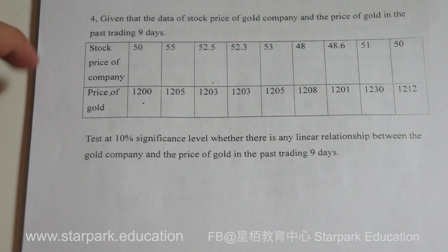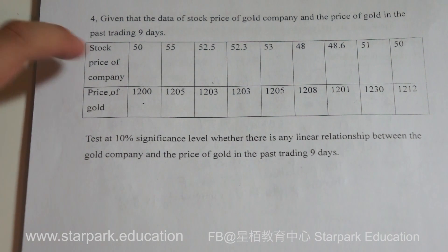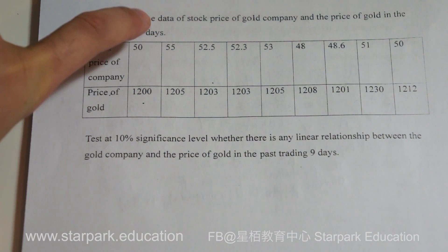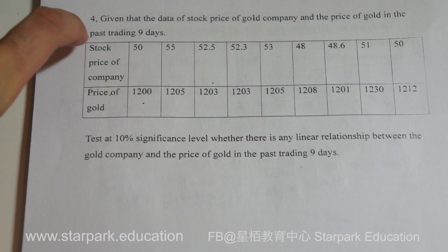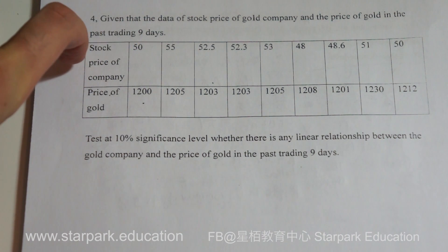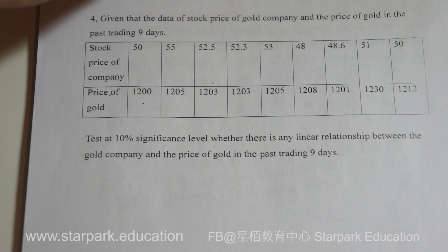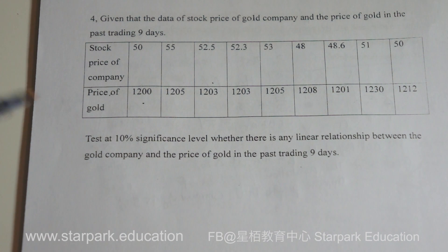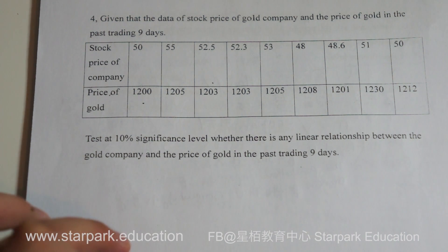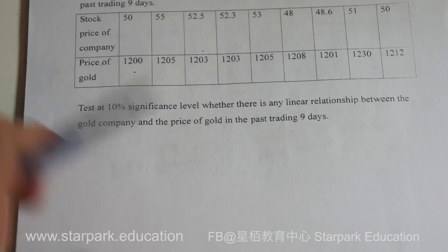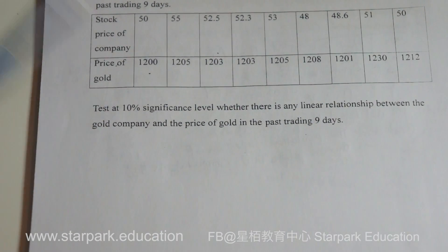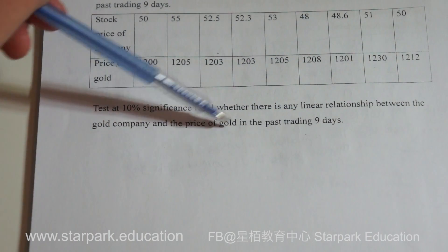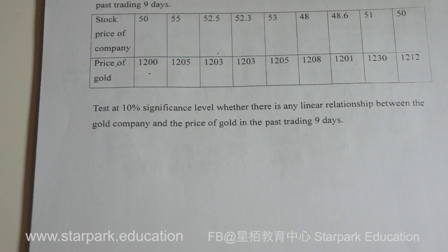Case 4 uses the following example: given the data of stock price of a gold company and the price of gold over the past 9 trading days, you are going to test at a 10% significance level whether there is any linear relationship between the gold company stock price and the price of gold.